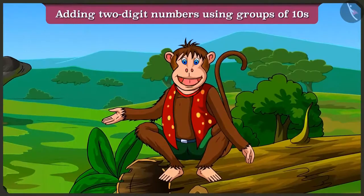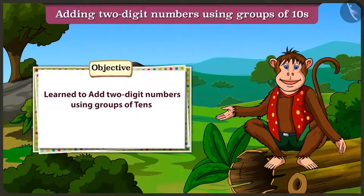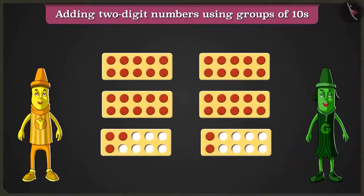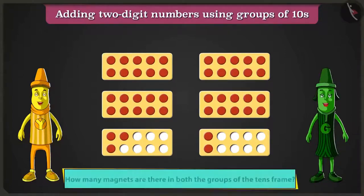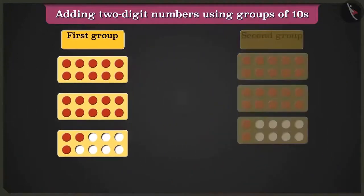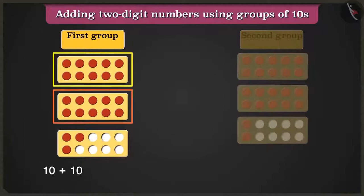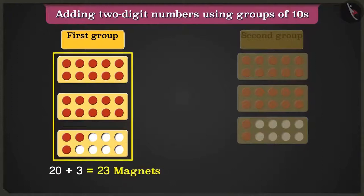Friends, today in this video, we will learn the addition of two-digit numbers with the help of groups of tens using examples from Yellow and Green's conversation. Greeny, look, this is a tens frame. There are red magnets on the frame. Can you tell me how many total magnets are there in both the groups of tens frame? In the first group of tens frame, adding ten and ten makes twenty. Twenty plus three equals twenty-three magnets.